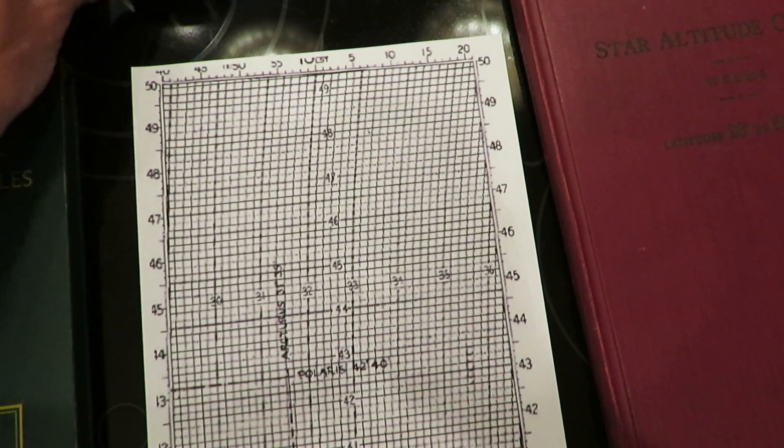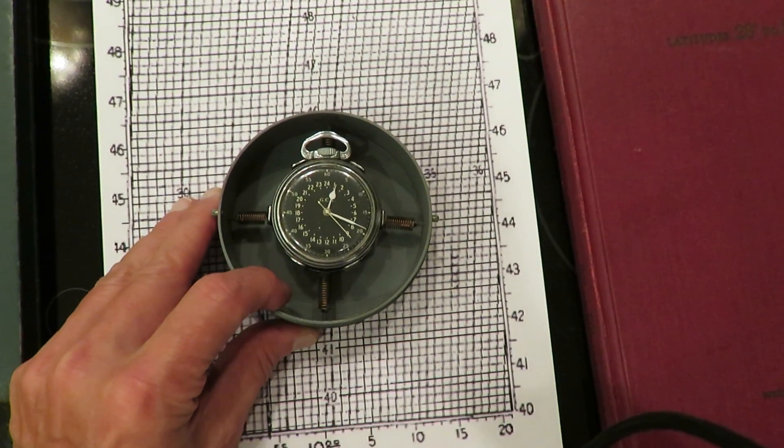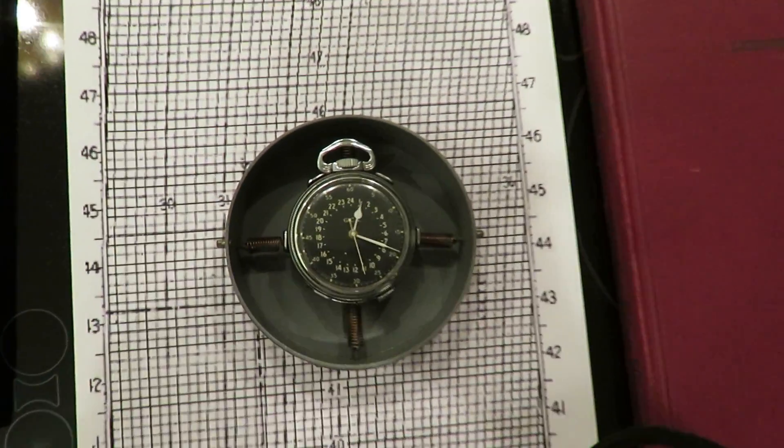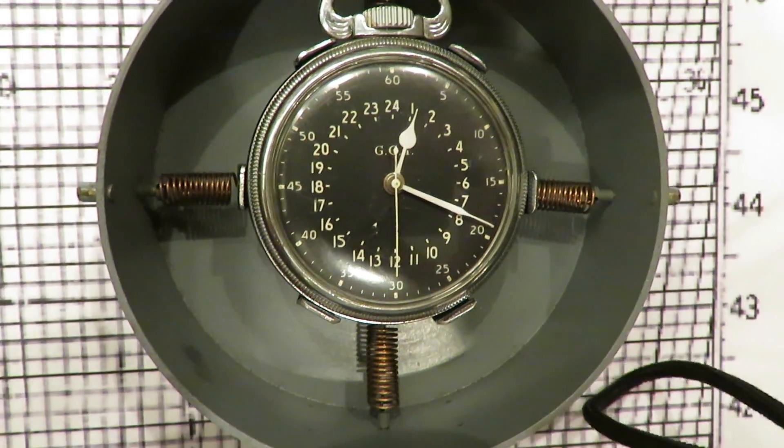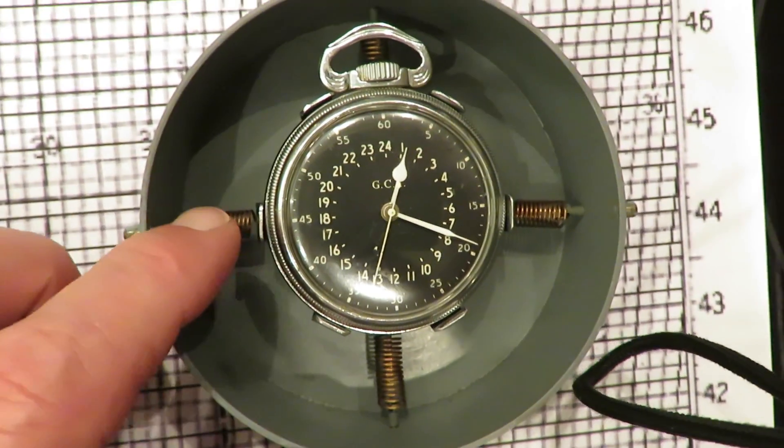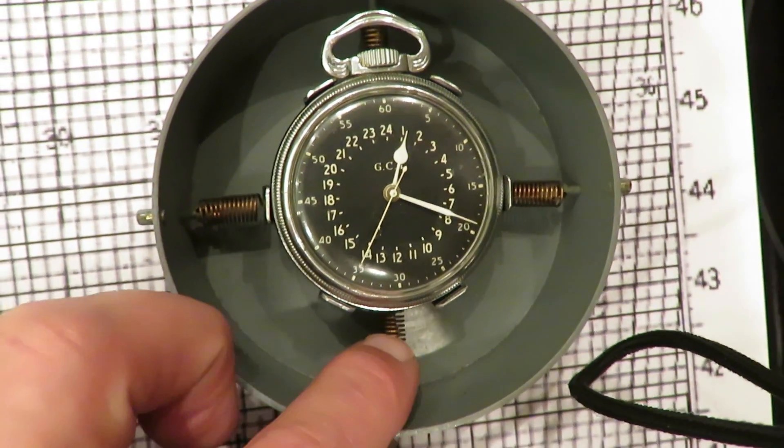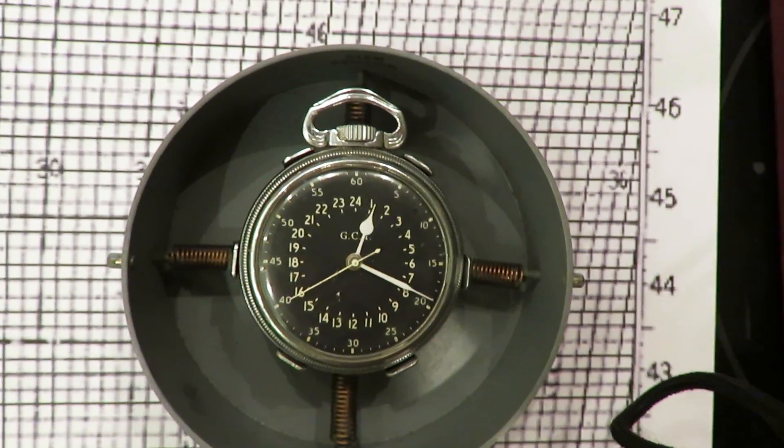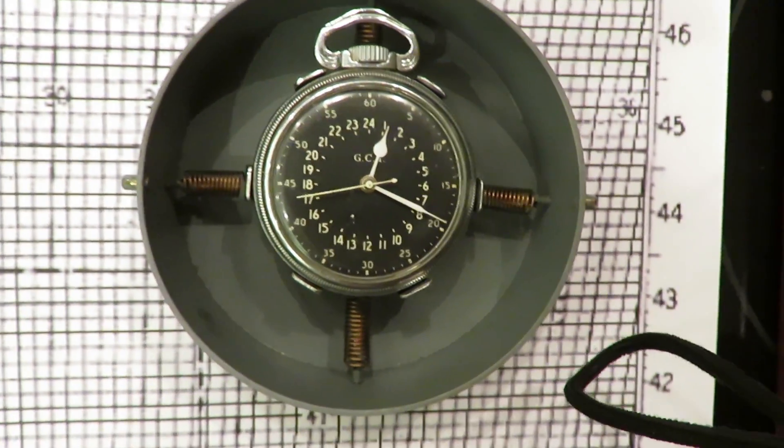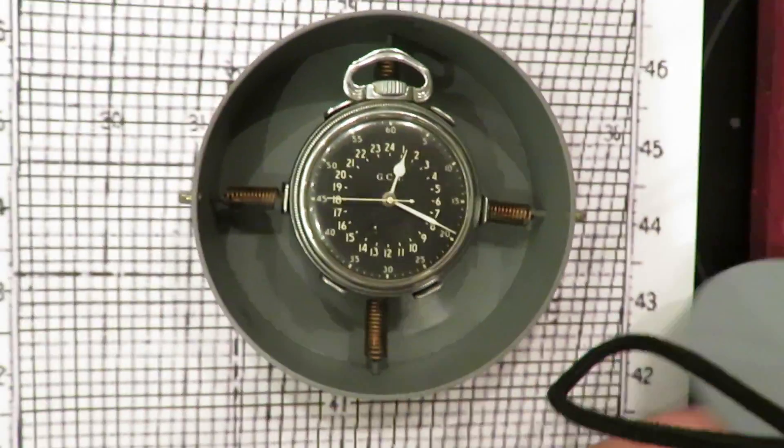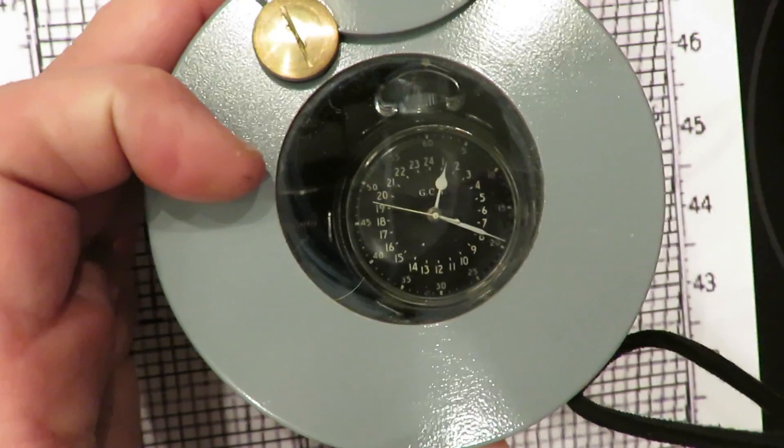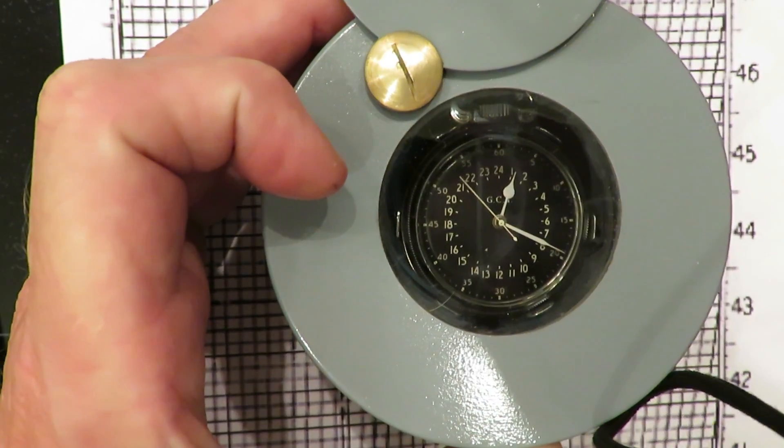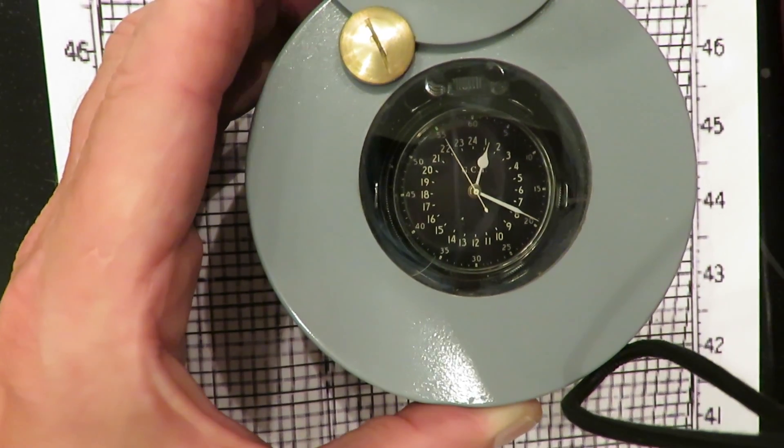This is an example of a Greenwich civil time watch. It was used by the navigators. You can see that it is a chronometer and it is set to Greenwich mean time, carried in this case which has several springs here to cushion it from shock. As a matter of fact, to further protect the device, there was actually a cover which would fit here and allow the navigator to observe the watch without even touching it.